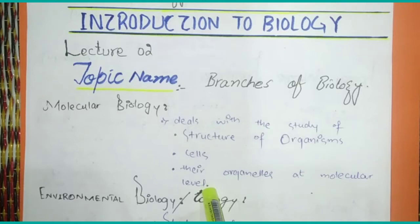The molecular level is the elemental form. These are examples of molecular levels which we study in molecular biology — the structure of organisms, cells and organelles studied at the molecular level.